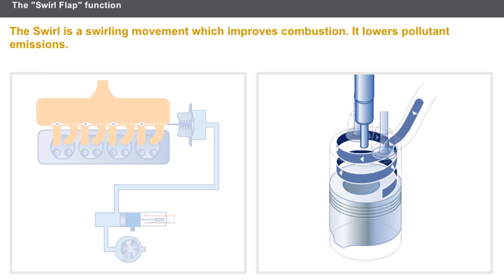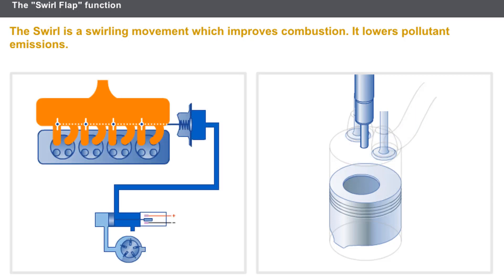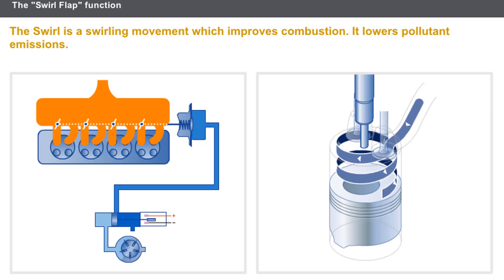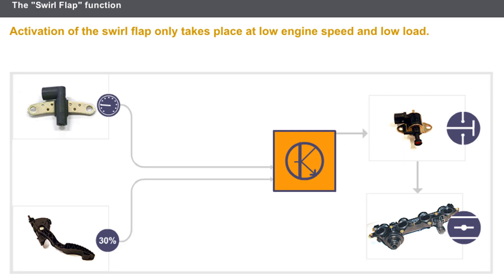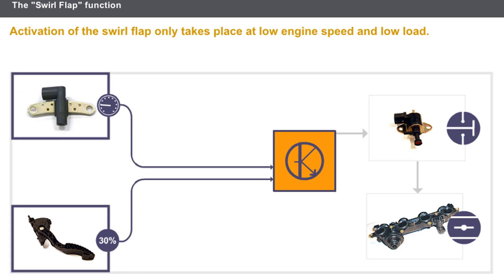The swirl is a swirling movement which improves combustion and lowers pollutant emissions. When the flap is open, the air passes through the two tracts at the same time and the swirl effect is low. When the flap is closed, the air passes through the helical tract only and the swirl effect is at its maximum. The swirl effect requires the inlet tract to be closed, which results in a loss of engine power. Activation of the swirl flap only takes place at low engine speed and low load.